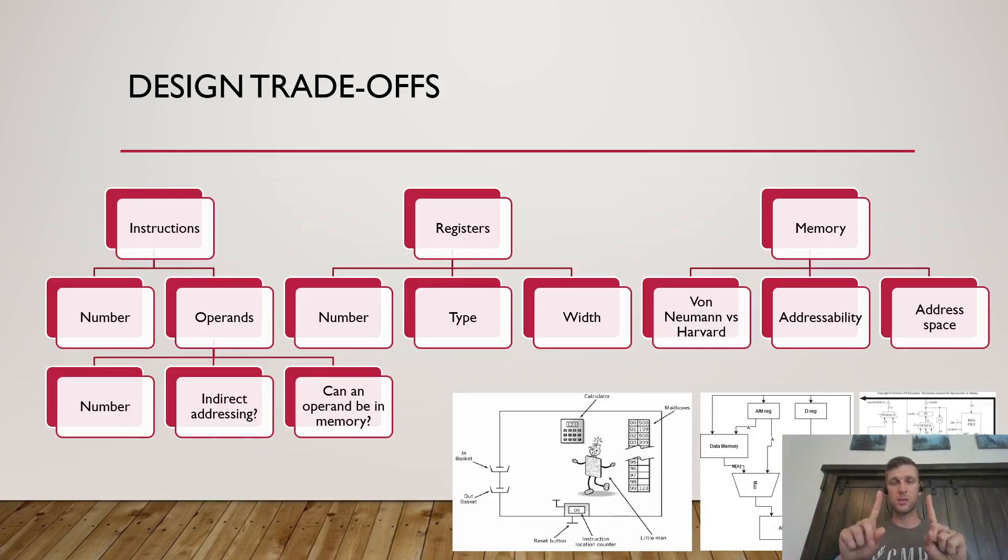So there are kind of two things that I want you to take away primarily from this lesson, those first two objectives. Number one, I want you to understand that when we look at a computer, there are more ways to describe it than just looking at the data paths or the number of instructions or the number of registers. How many operands are in each instruction, whether we can perform indirect addressing, how wide our registers are, what type of architecture we're using. These all are different ways we can sort of categorize our computers that have direct effects.